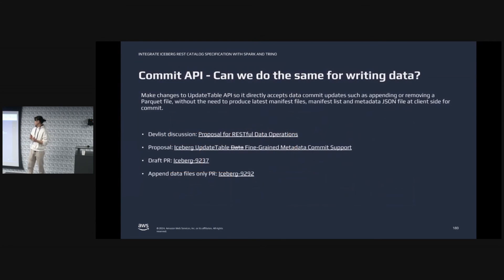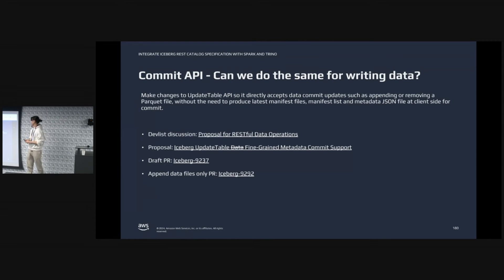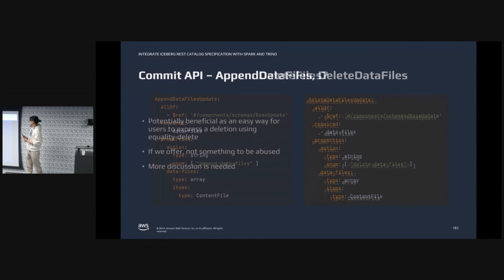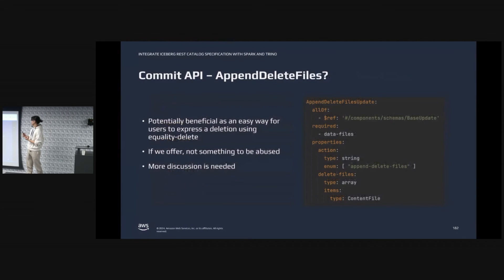With the scan API, another question is: can we do the same thing for writing data? Today, to do a data write, you have to first write the manifest files, then the manifest list and metadata files, and then call the API to do the commit — three files to do everything. But why not, if you have a file to append, just call append files? If you want to delete a file, just do that. That is what we are proposing here — adding those operations to the spec. And a somewhat controversial one: can we also append delete files? If we can, we can express this even in a local Python thread, saying I want to delete something and the data query will return results. But this is getting more controversial and we want more community discussion.